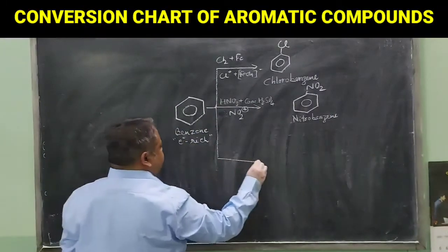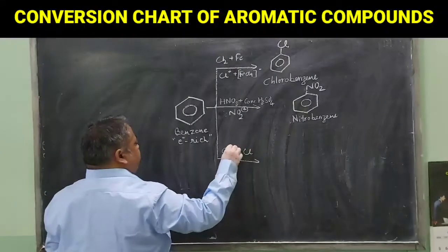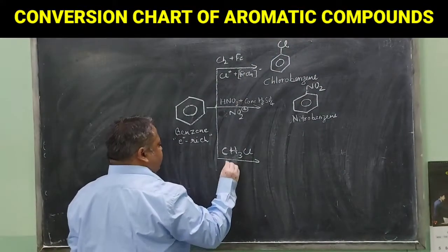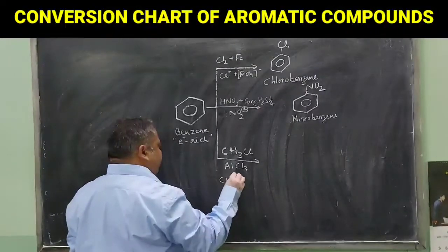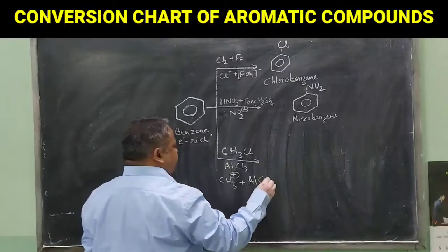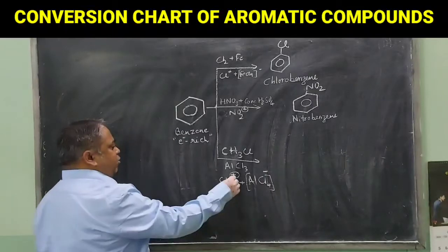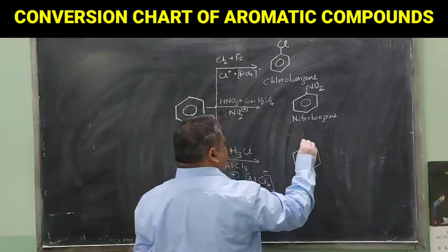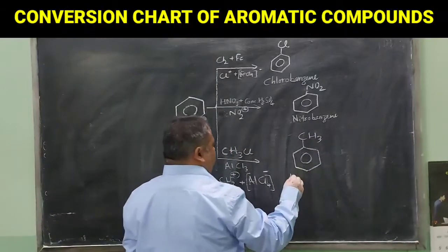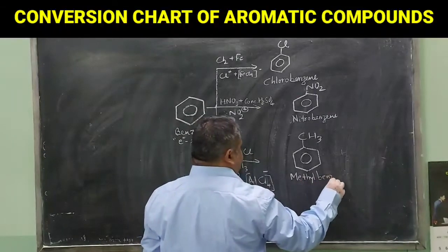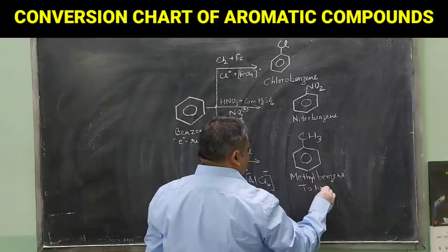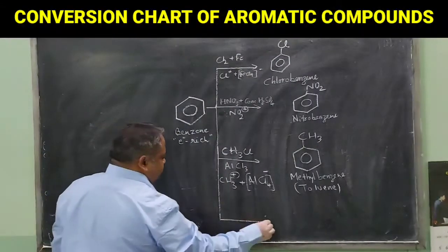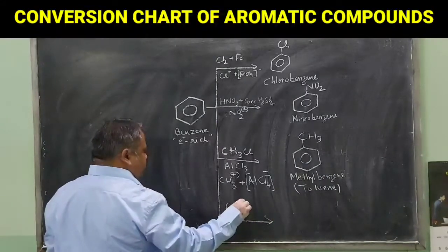If you treat this with CH3Cl, any haloalkane, then in presence of AlCl3 it produces methyl carbocation and AlCl4 minus. This methyl carbocation can attach with benzene and it will form methylbenzene or toluene.